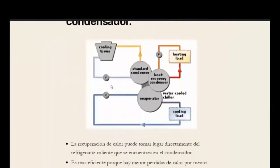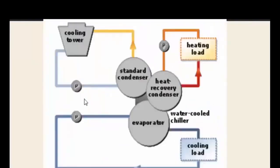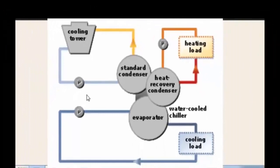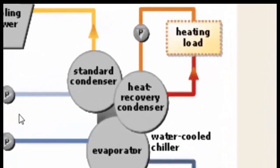Now let's look at a second variant of the heat recovery system with a water-cooled chiller. In this variant, the heating circuit water — the circuit used to provide heat — does not go through an intermediate external exchanger. Instead, the water used for heating is passed directly through the chiller condenser itself.